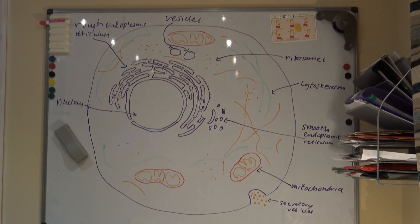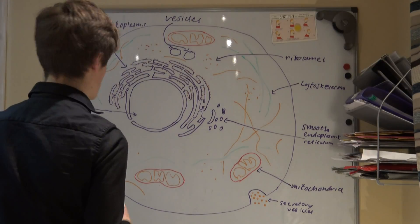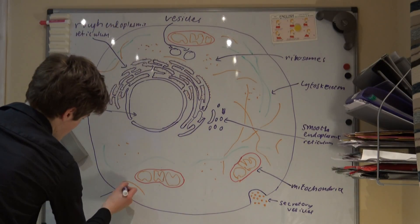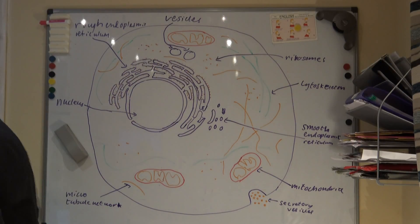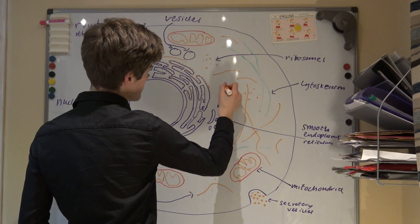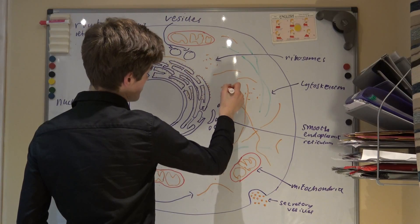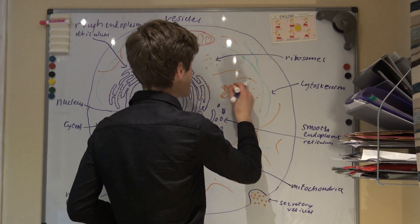The final component of the cytoskeleton is the intermediate fibers, which give the cell mechanical strength to help maintain integrity. Apart from these three components, there is one other that is part of the cytoskeleton, that is the centrioles.